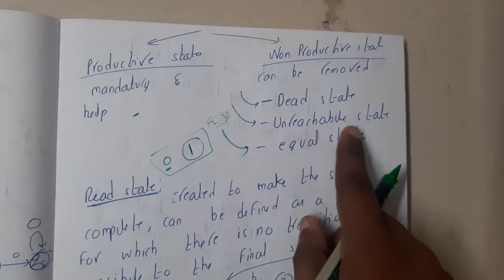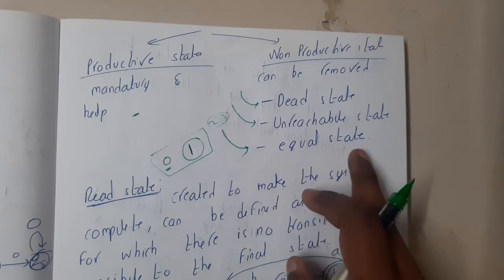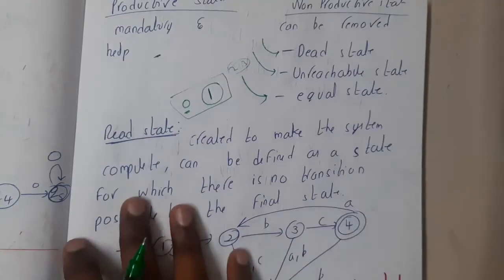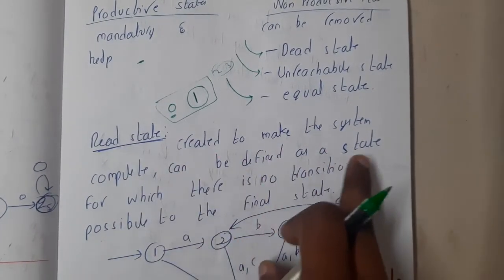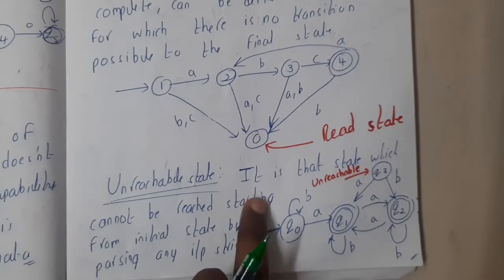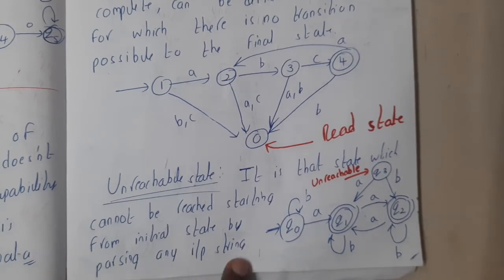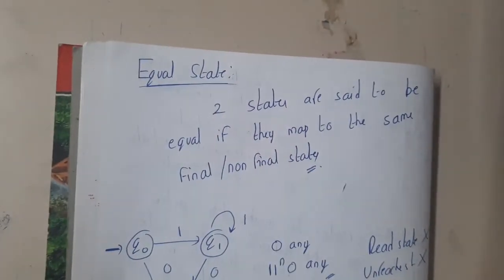An unreachable state, as the name says, can be directly deleted. For equal states, if you are 100% sure two states are equal you can equate them using the final/non-final state mapping method. A dead state is created to make the system complete — it is a state from which no transition to a final state is possible. An unreachable state cannot be reached from the initial state by passing any input string. Two states are equal if they map to the same final or non-final states.